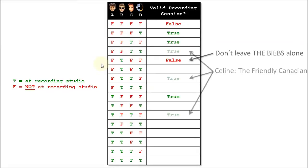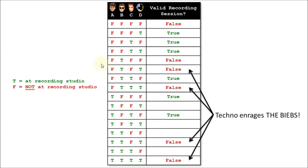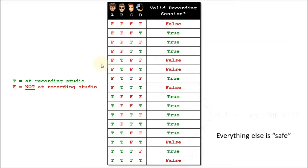Now, Celine Dion's a very friendly person, so we can assume that if she's in the studio with anyone else, they'll get along just fine. But a little-known fact about Justin Bieber is that he's terrified of techno music, so we want to make sure that he stays away from Daft Punk at all costs. So we'll mark all of those cases where B and D, being the Biebs and Daft Punk are in the studio at the same time, as false. And then finally, we can just assume that everything else represents a safe case.